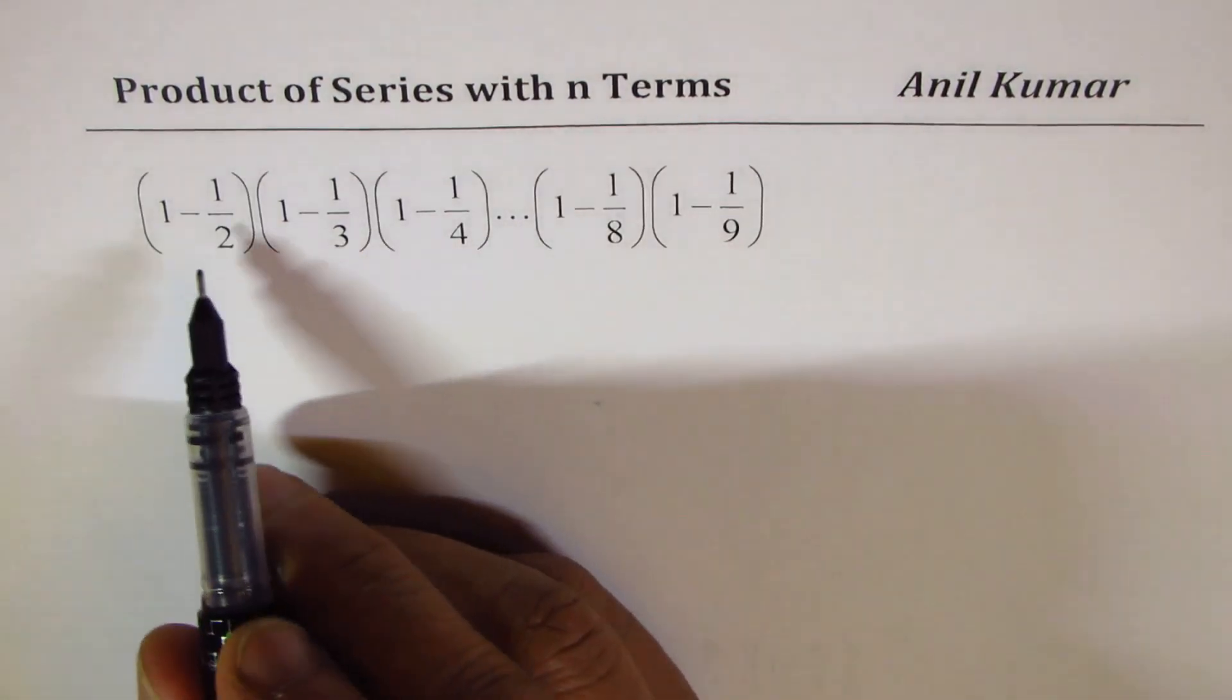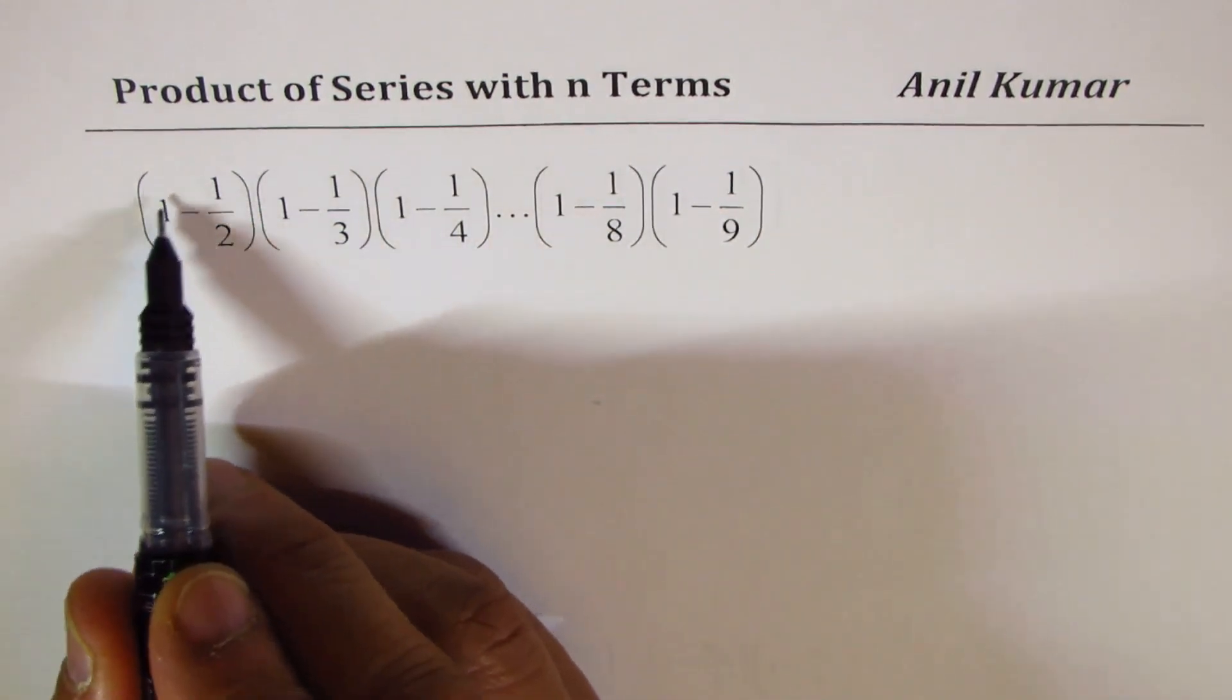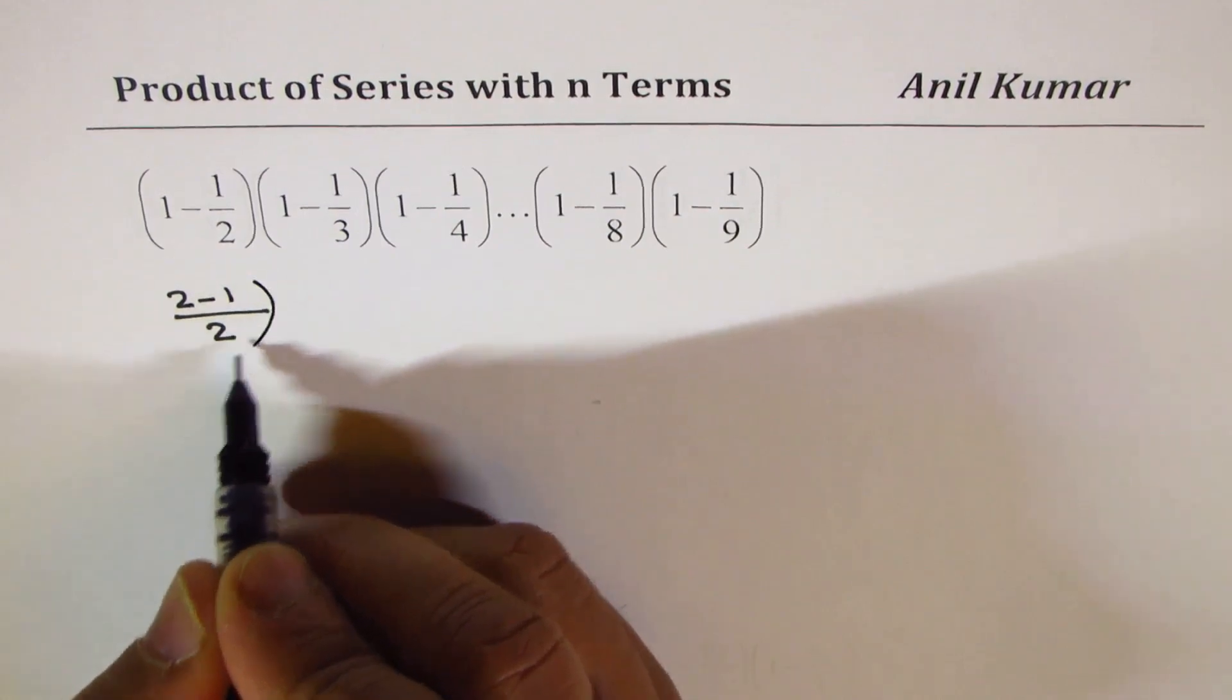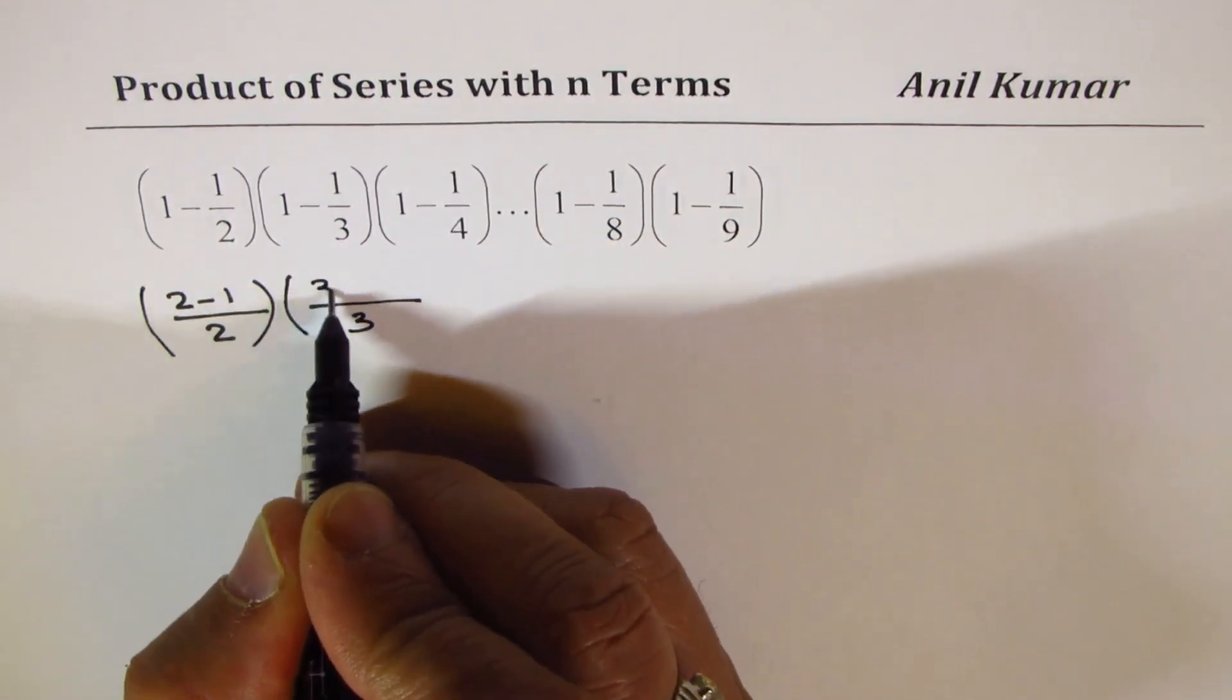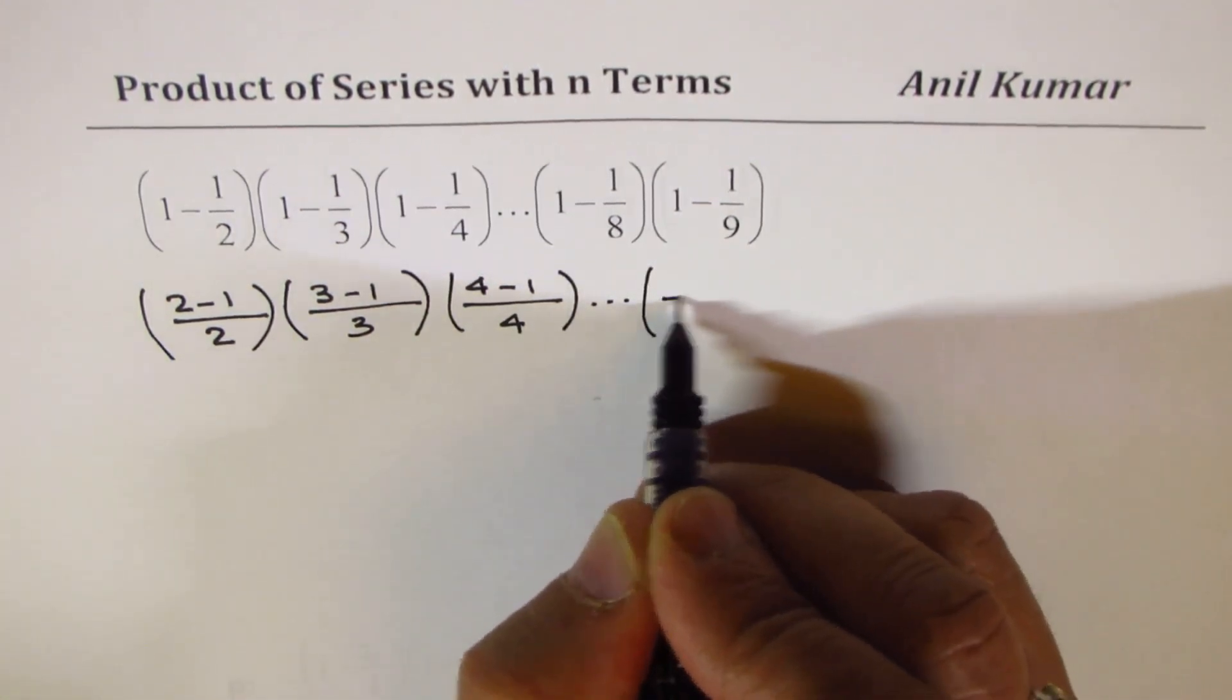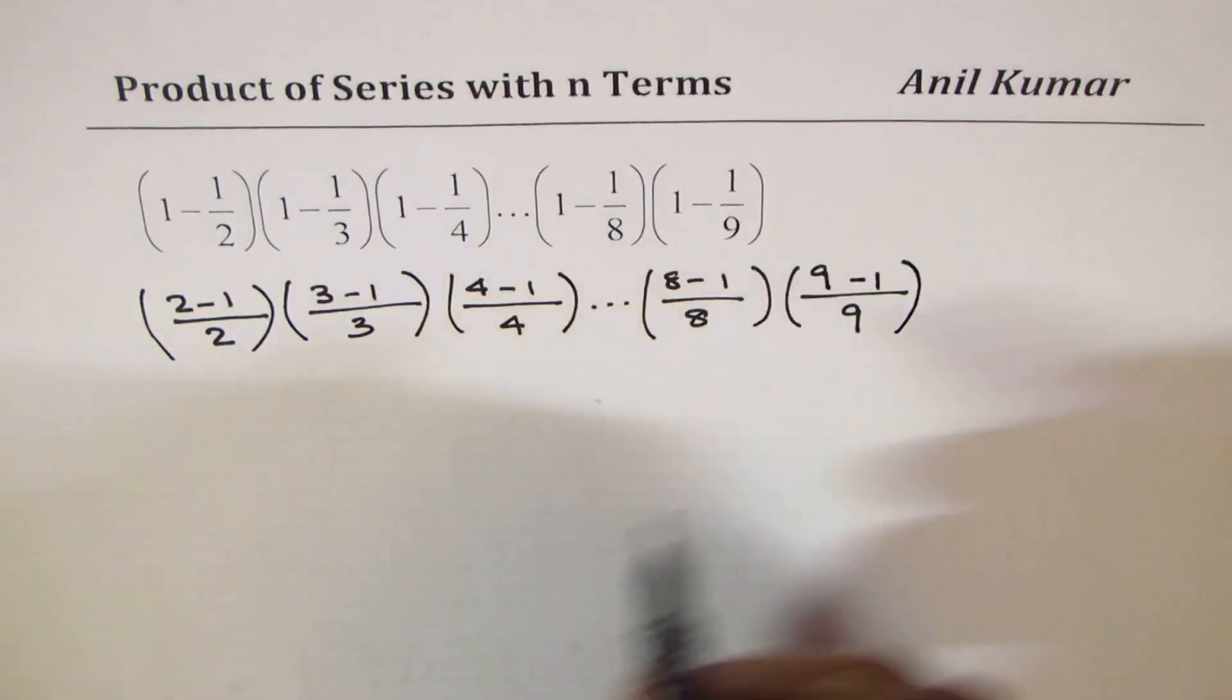Now, in the very first one, which is 1 minus half times 1 minus 1 over 3, and so on, what we can do here is we can simplify each fraction. Taking common denominator, which is 2 in this case, we get 2 minus 1. Here, the common denominator is 4, we get 4 minus 1, and so on. Then we get common denominator 8, 8 minus 1, and then 9, 9 minus 1.